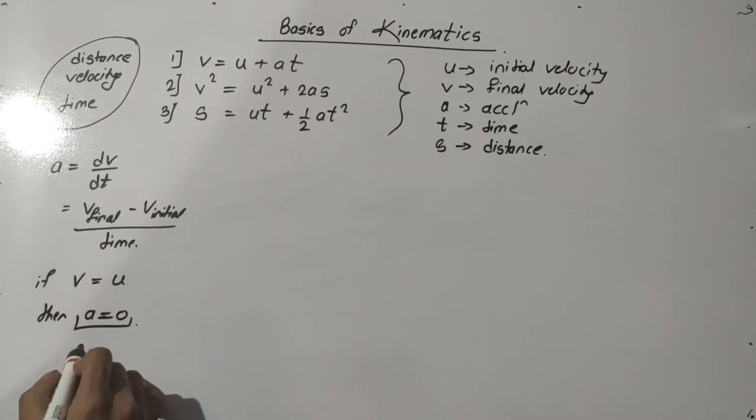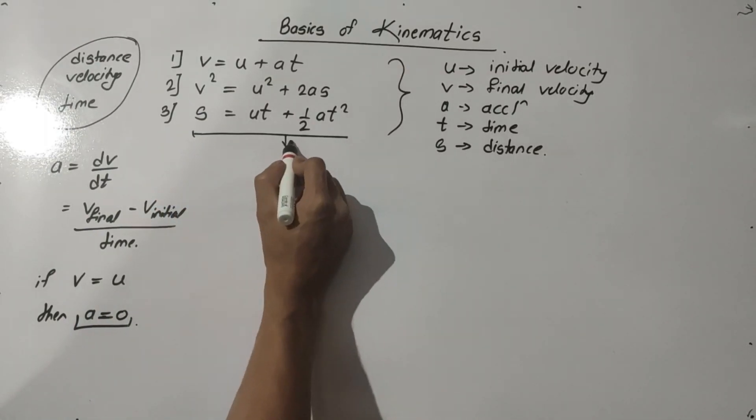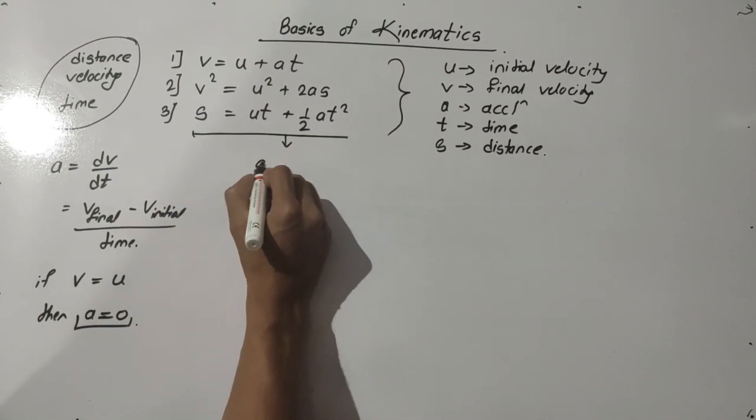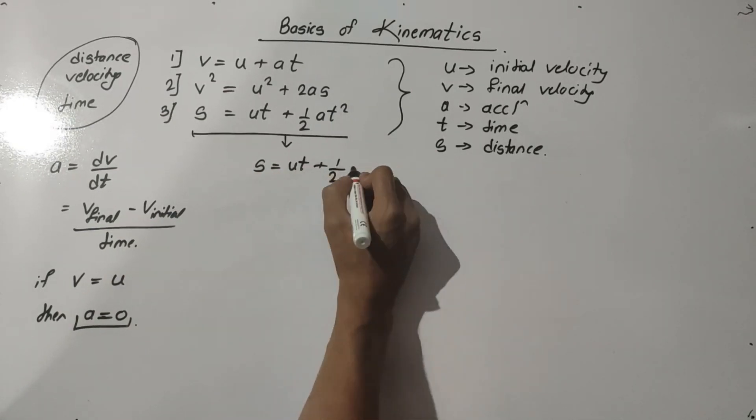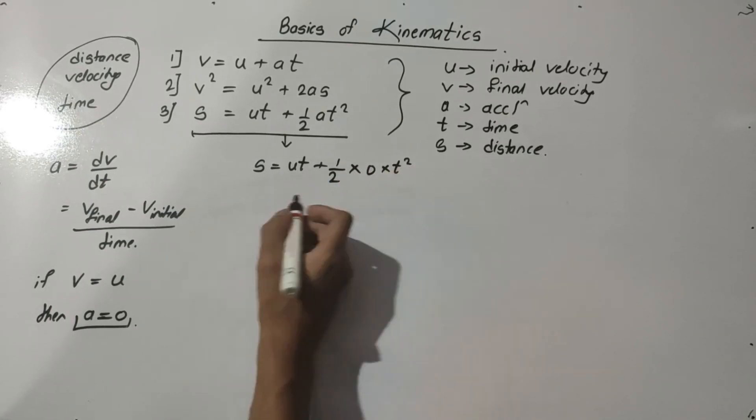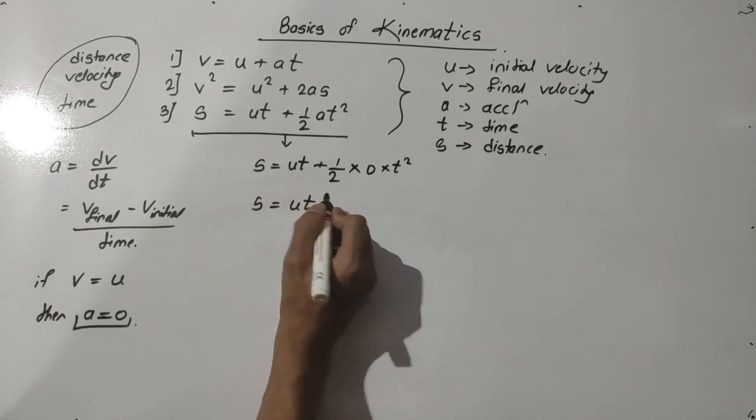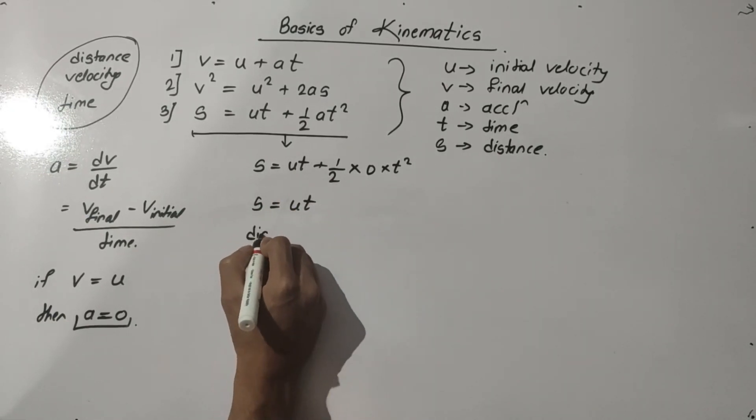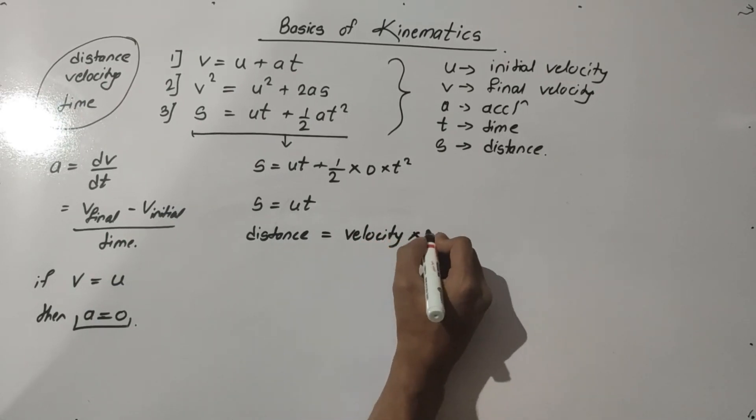Let's substitute that acceleration in formula number three. S equals UT plus half into - if we put acceleration equals zero into time square, then we get S equals UT. That is, distance equals velocity into time.